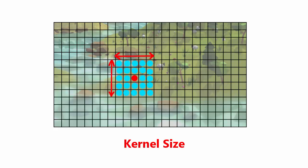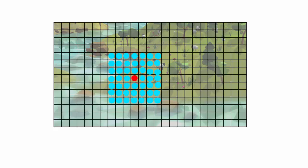The size of this area is known as the kernel size, and for this tutorial I'm going to be using an 11x11 kernel. In a very simple blur, all of the pixels in the kernel would just be averaged together equally to find the output colour.